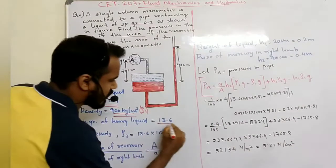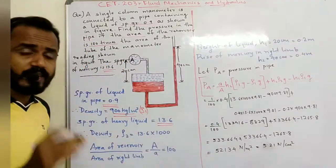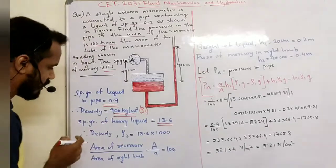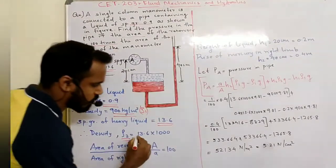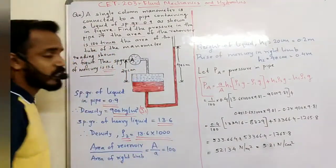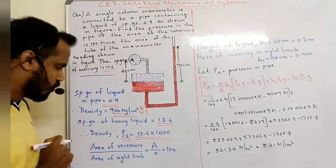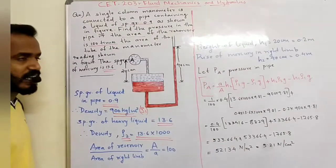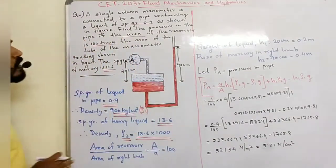The specific gravity of the heavy liquid (mercury) is 13.6. The density rho2 equals 13.6 into 1000 kg per meter cube. The area of the reservoir divided by the area of the right limb equals 100.